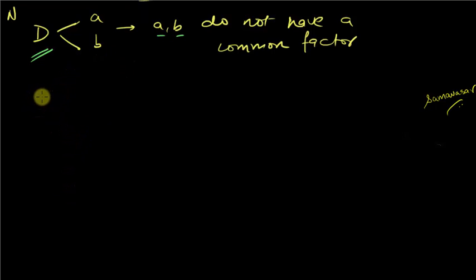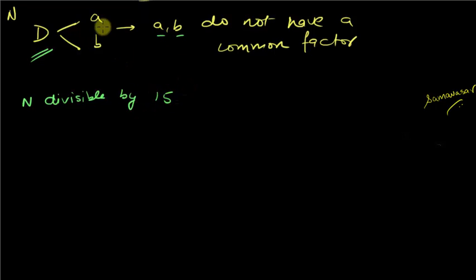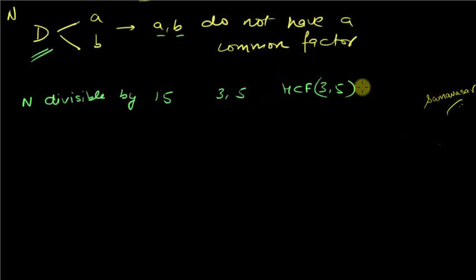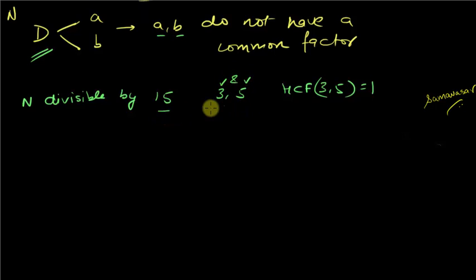For example, if I have to check whether any number N is divisible by 15, I can find two factors of 15 — say 3 and 5. Since 3 and 5 do not have a common factor, their HCF is 1. So to check divisibility by 15, all I need to do is check whether the number is divisible by both 3 and 5. If it is divisible by 3 and 5, it will be divisible by 15.